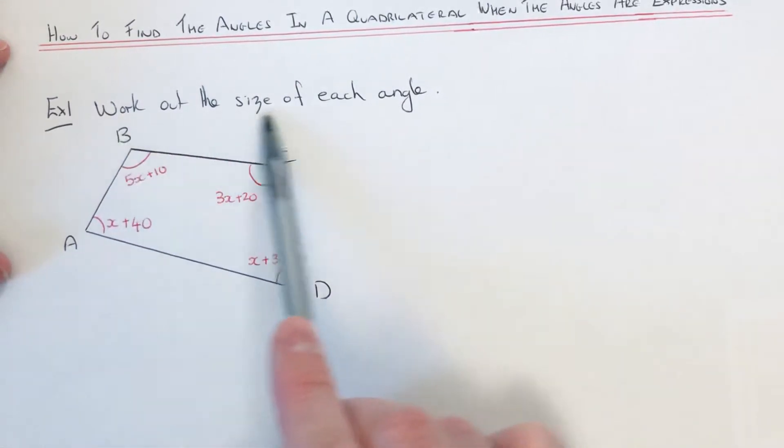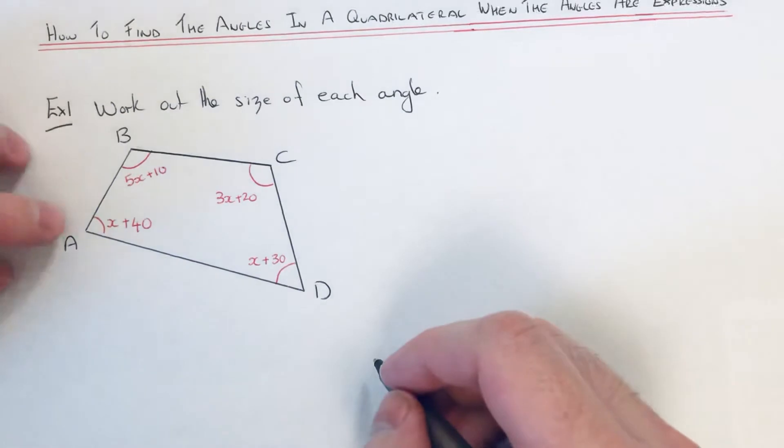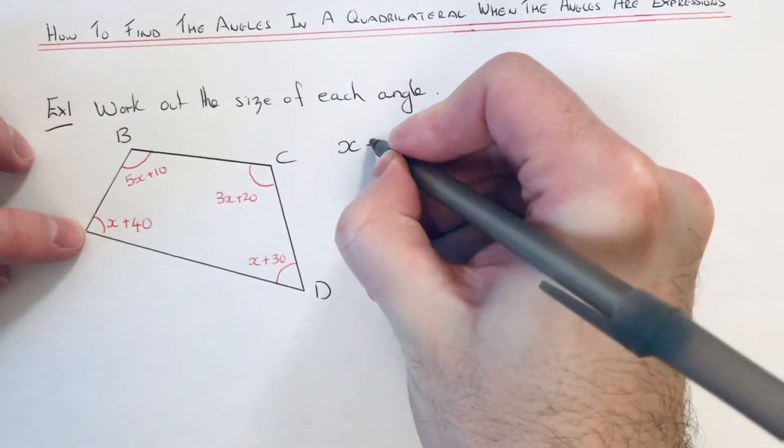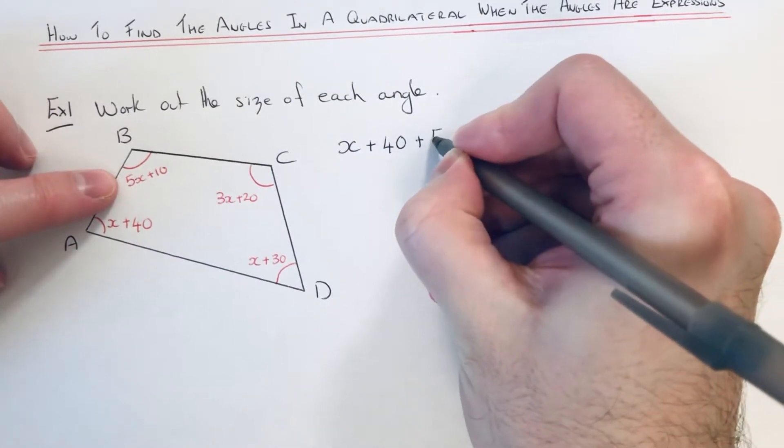So in this example here we need to work out the size of each angle. So the first thing we need to do is add the angles up. So if we write these across one line.